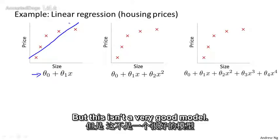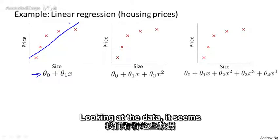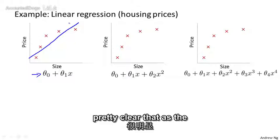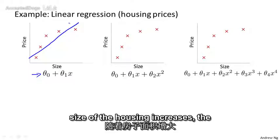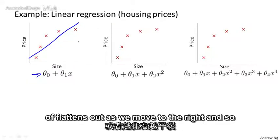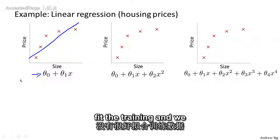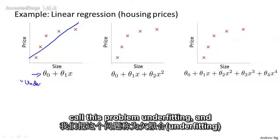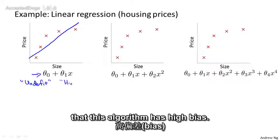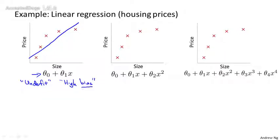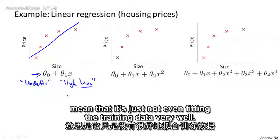But this isn't a very good model. Looking at the data, it seems pretty clear that as the size of the house increases, the housing prices plateau, or kind of flatten out as we move to the right. And so, this algorithm doesn't fit the training set very well, and we call this problem underfitting. And another term for this is that this algorithm has high bias.